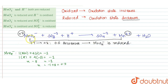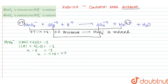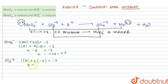Now, SO3²⁻ is converting into SO4²⁻. In both of these we will calculate the oxidation state of Sulphur. In SO3²⁻, we have one atom of Sulphur. Let us consider Sulphur's oxidation state as X. So, 1×X + 3×(−2) = −2, which gives X − 6 = −2. Therefore X = −2 + 6 = +4. So in SO3²⁻, the oxidation state of Sulphur is +4.